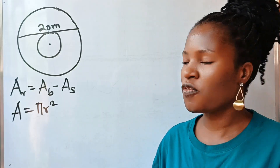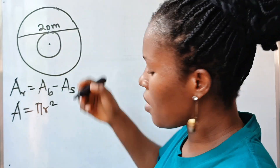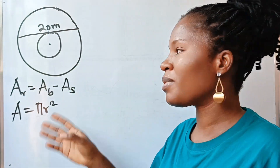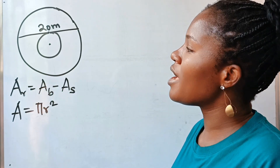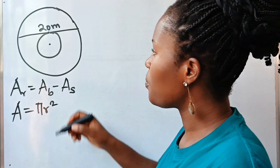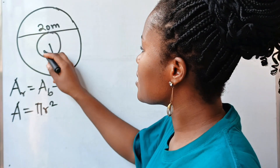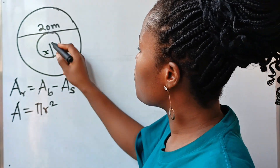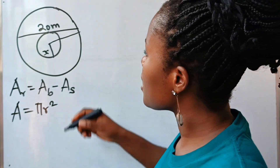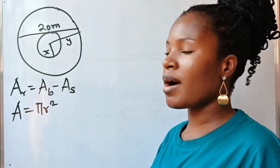Now, where are we going? What are we going to do first? Remember that any line you draw from the center of a circle to the circumference is the radius. So let's assume from the center to the inner circle is the radius of the small circle — let's call it x. Then from the center to the outer edge is the radius of the big circle — let's call it y.